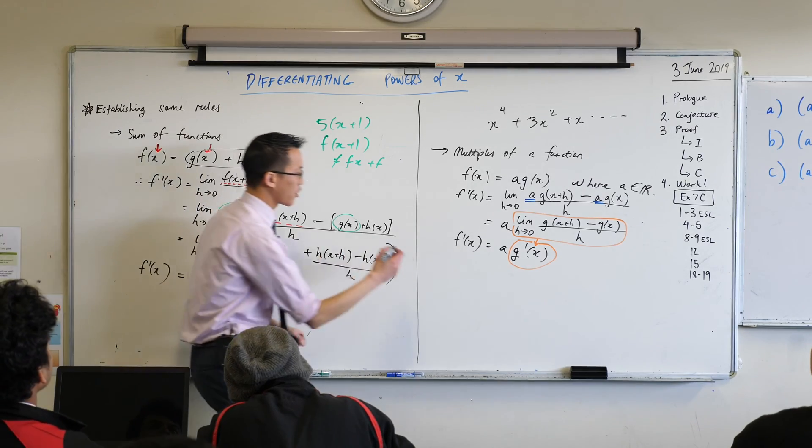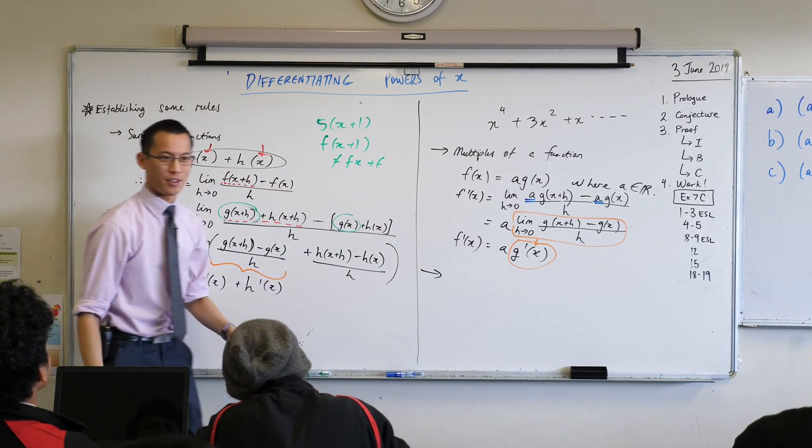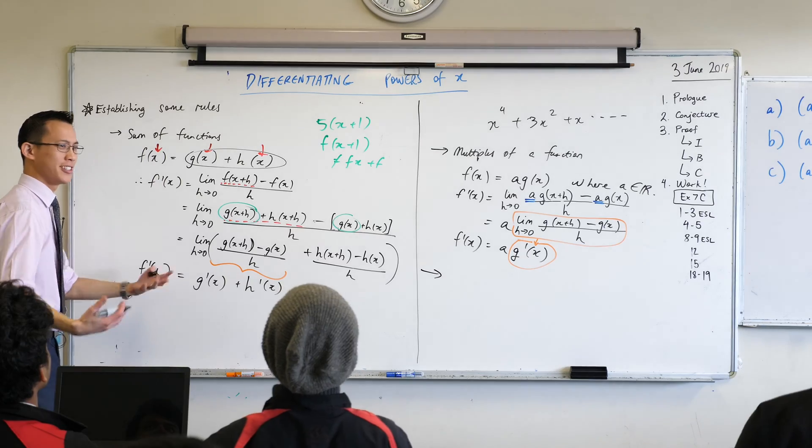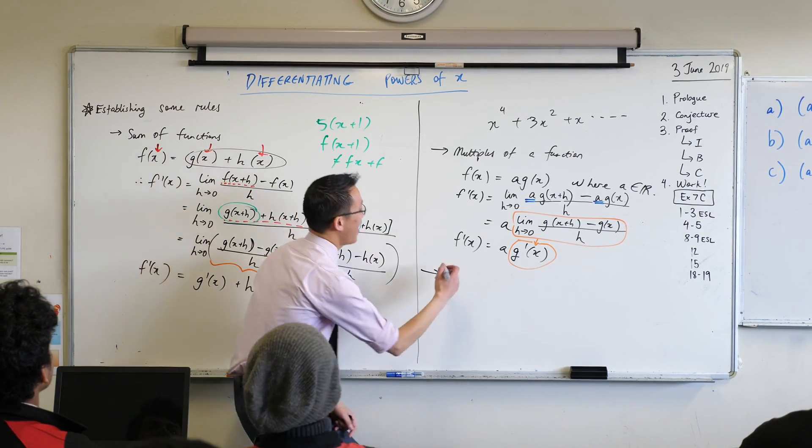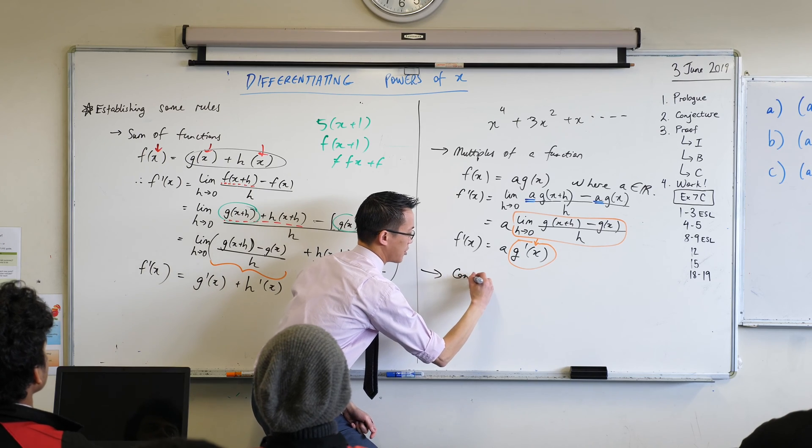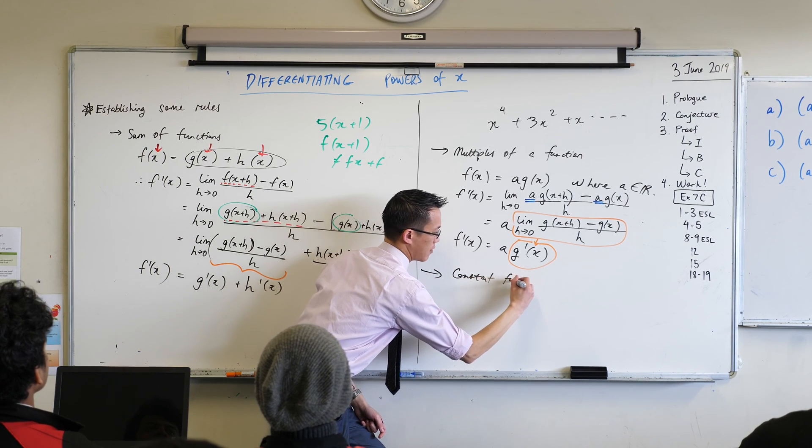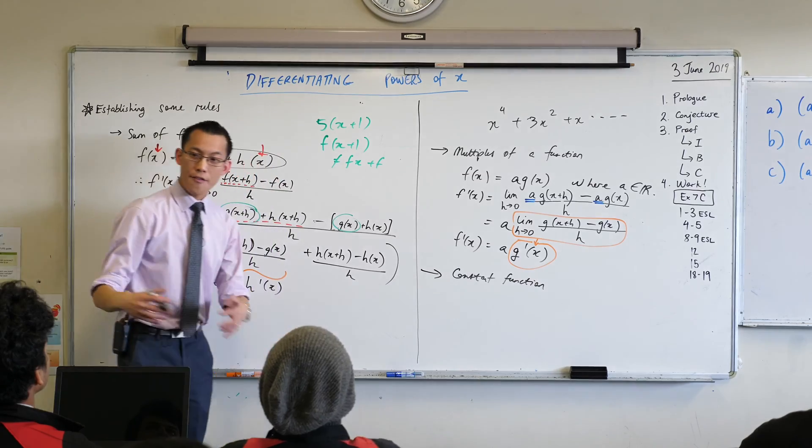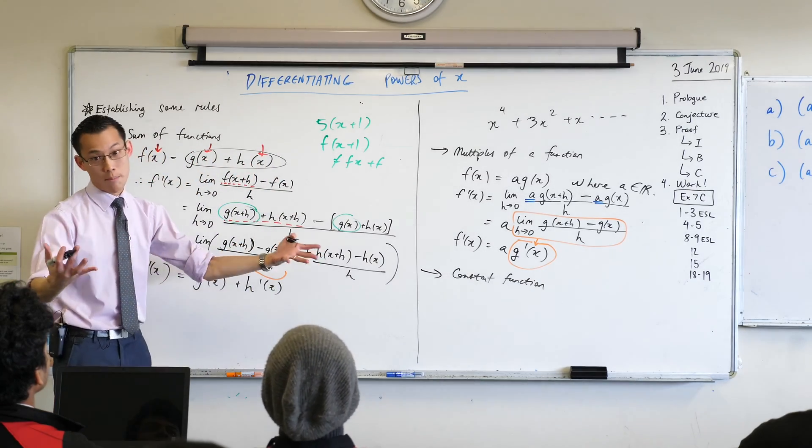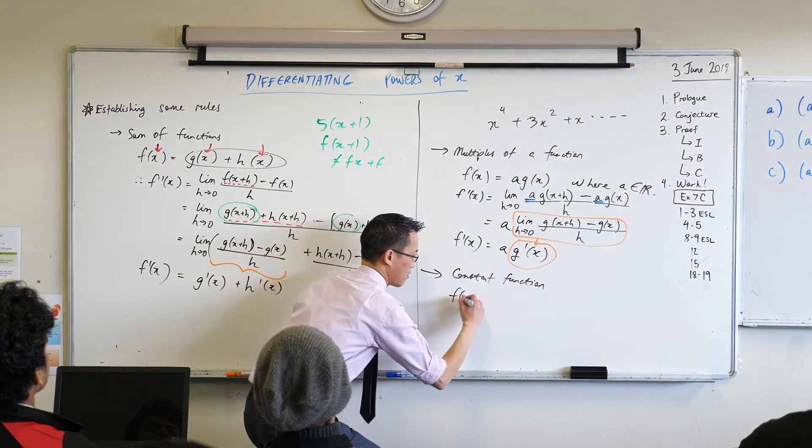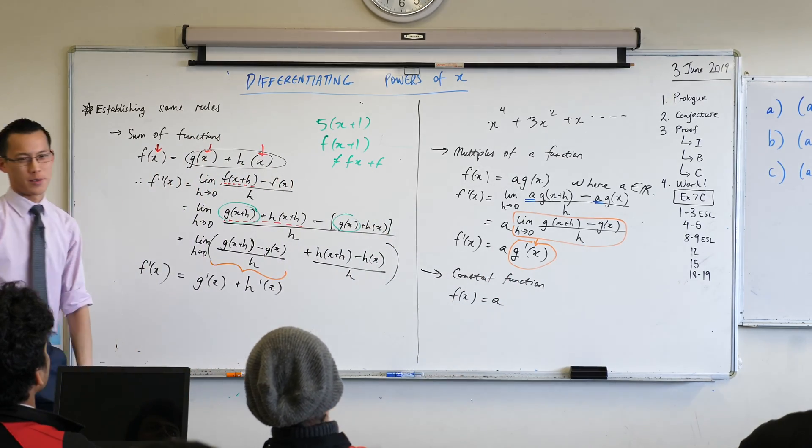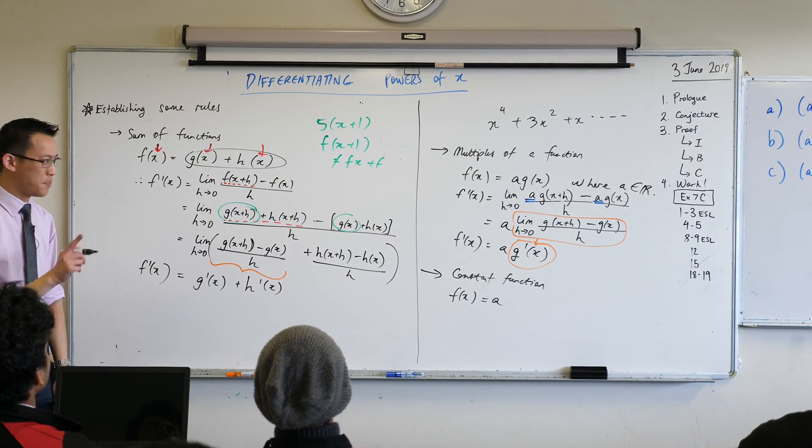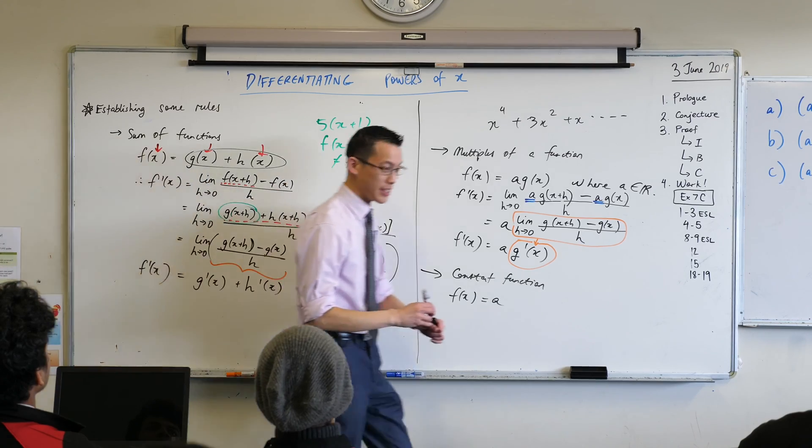All right, one last one. And I'm not going to go with first principles for this one because I think your first principles outed a little bit. You've had enough first principles for this little chunk. Let's think of a constant function. If our f of x is just a number, like say a. We could do this by first principles. We could. But let's not. Let's think about another way of doing this.